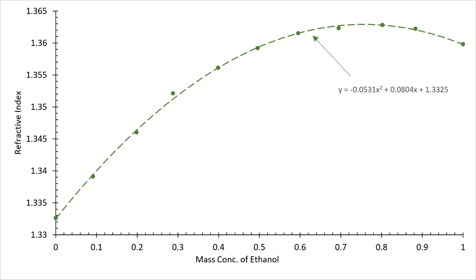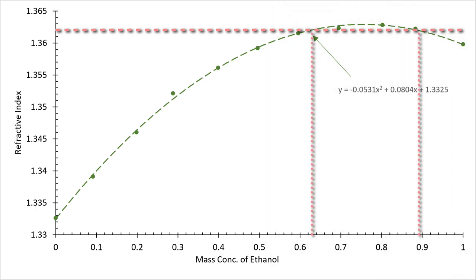To explain why this is necessary, assume a sample has a refractive index of 1.362. According to this chart, there are two possible concentrations that will yield the same index value.